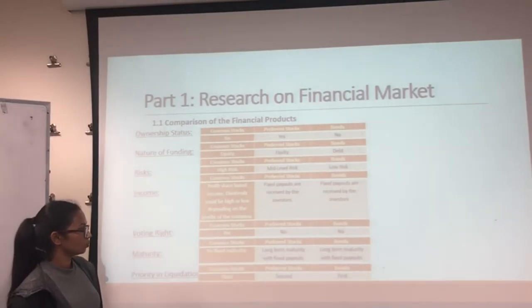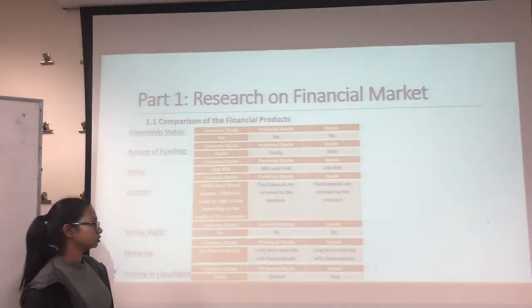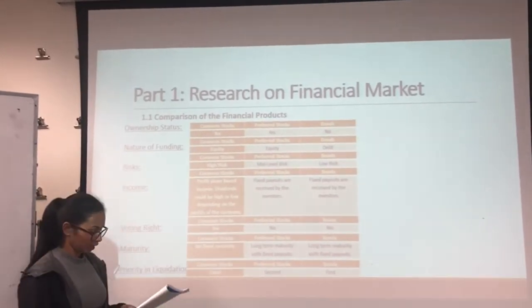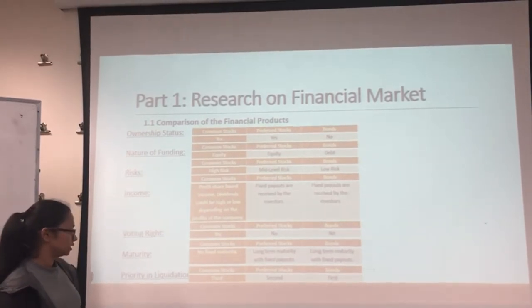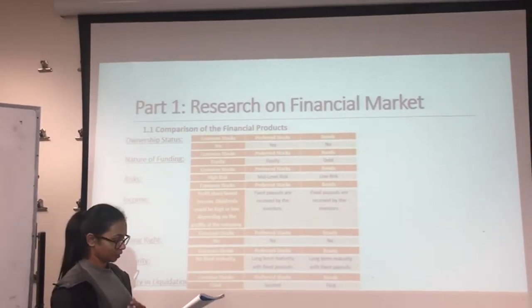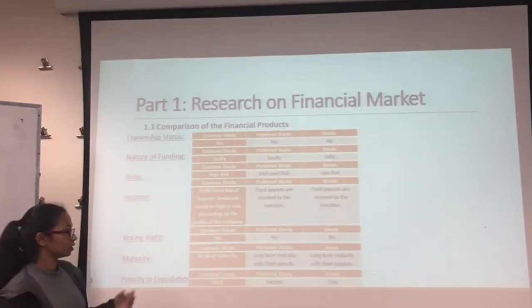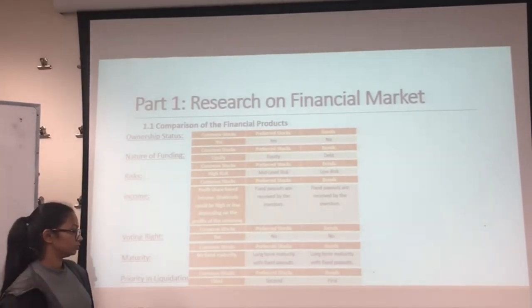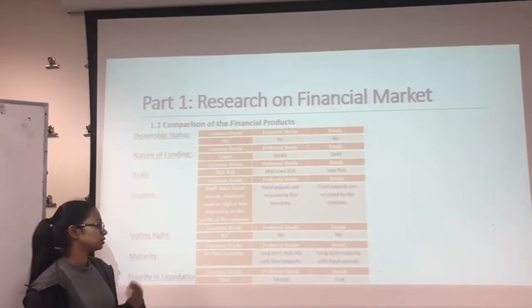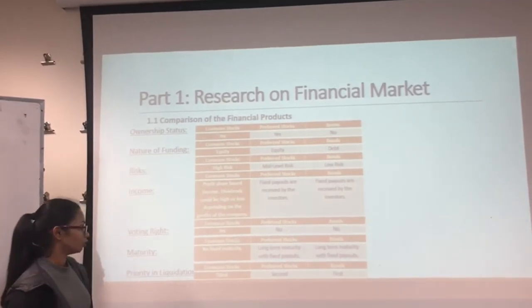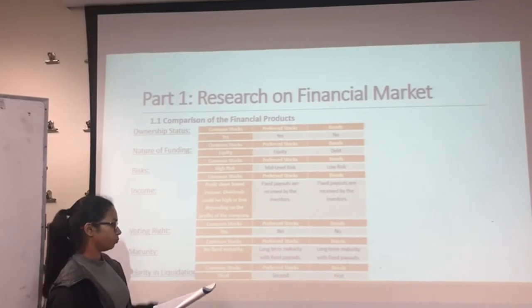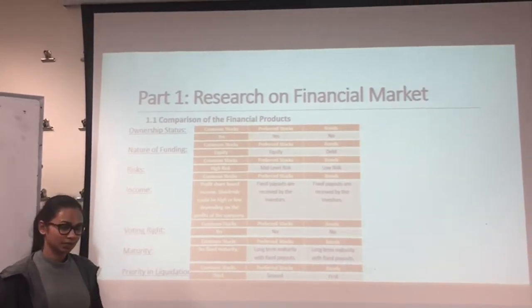However, preferred stocks and bonds have long-term maturity with fixed payouts. Regarding priority in liquidation, this criterion differentiates importance in the event of company liquidation. Bonds come first, preferred stocks are second, and common stocks have the last importance when it comes to company liquidation.